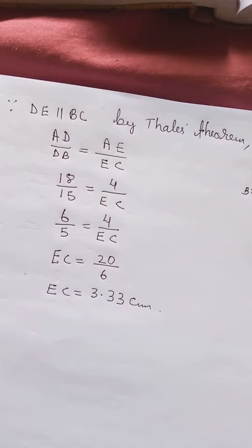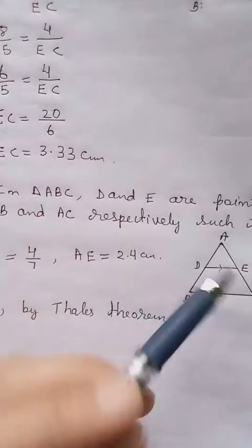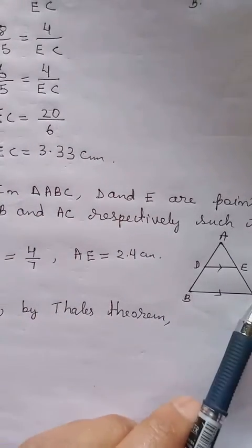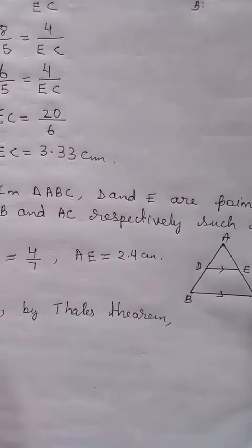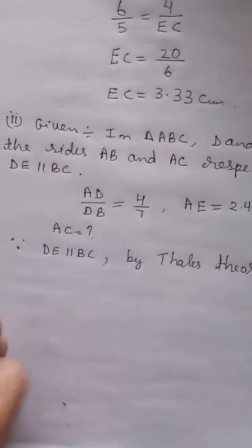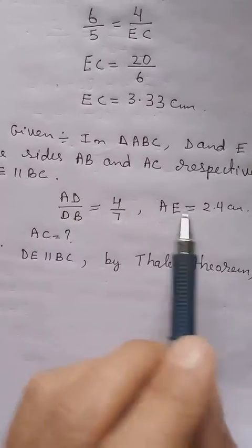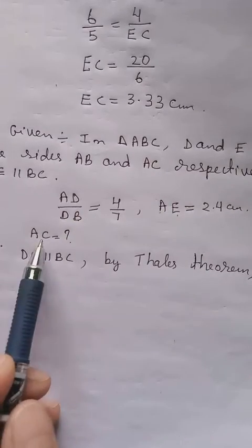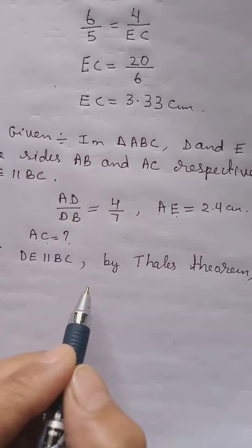We will continue to number two now. Here again we have triangle ABC, then DE parallel to BC. So once we have this condition we can apply Thales theorem. Again here they give us AD by DB. We have AE. Then we have to find AC. Since we have this ratio, let's follow from there only.